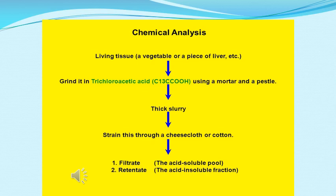Here is the flowchart of the chemical analysis of the living tissue. The first step is to take a living tissue — a vegetable, a piece of liver, or any tissue from plant or animal. The second step is to grind it in trichloroacetic acid using a mortar and pestle; it will be converted into a thick slurry. Then it is filtered with the help of cheesecloth or cotton cloth, giving two fractions: the filtrate, which is the acid soluble pool, and the retentate, which is the acid insoluble fraction.